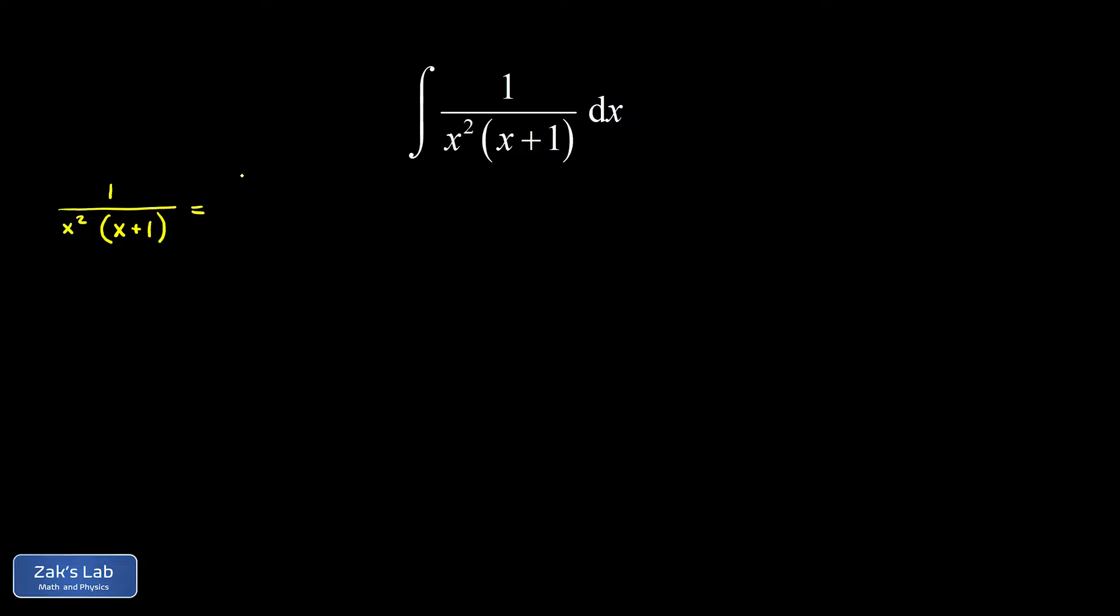We can look at that x squared piece as a repeated linear factor. So our proposal has to include an a over x and a b over x squared.